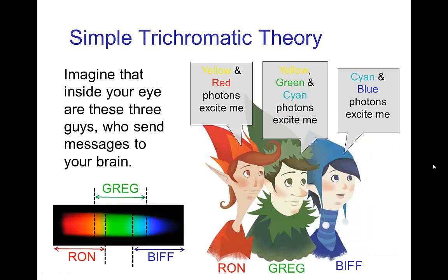Now, we understand from trichromatic theory how this works, that we have these three sensitive perceptors of different parts of the spectrum. And then, depending on the relative excitement of Ron, Gregg, and Biff, we perceive different colors from different spectrum.